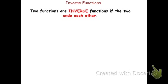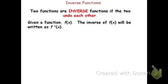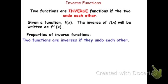To begin, let's look at a definition. Two functions are inverse functions if the functions undo each other. The notation we'll use: if you're given an original function f, the inverse would be f with a negative 1 exponent — f⁻¹(x), the inverse of f. Like we said before, two functions are inverses if they undo each other.